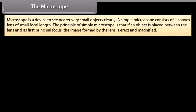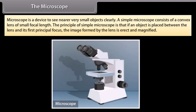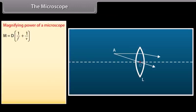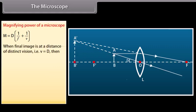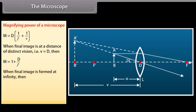The microscope. A simple microscope consists of a convex lens of small focal length. If an object is placed between the lens and its first principal focus, the image formed is erect and magnified. Magnifying power M = D × (1/F)(1/V). When the final image is at the distance of distinct vision (V = D): M = 1 + D/F. When the final image is at infinity: M = D/F.